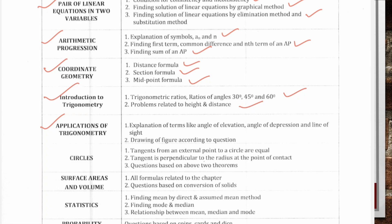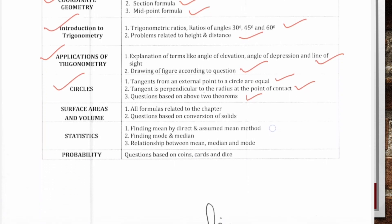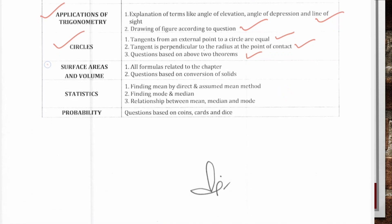From chapter Application of Trigonometry: explanation of terms like angle of elevation, angle of depression and line of sight, and drawing of figure according to the question. From chapter Circles: tangent from external point to a circle are equal; tangent is perpendicular to radius at the point of contact; and questions based on these two theorems. From chapter Surface Area and Volume: all formulas related to the chapter and questions based on conversion of solids.